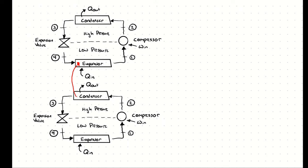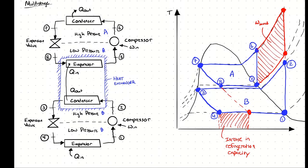We can improve the performance of a multi-stage refrigeration cycle by enclosing the condenser and evaporator together in a heat exchanger. As a result of this multi-stage refrigeration cycle, we can increase the refrigeration capacity corresponding to a certain temperature difference between high and low side saturation temperatures, and we have also decreased the amount of work required to operate the cycle. So we are decreasing the work in and increasing the refrigeration capacity, leading to a higher coefficient of performance.